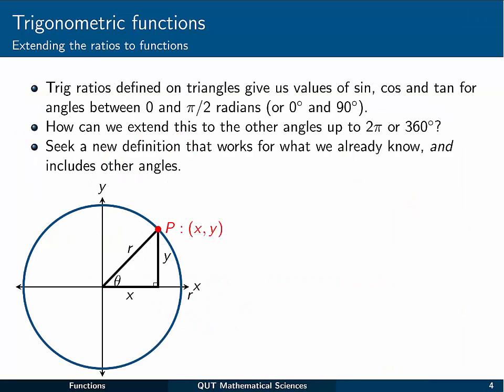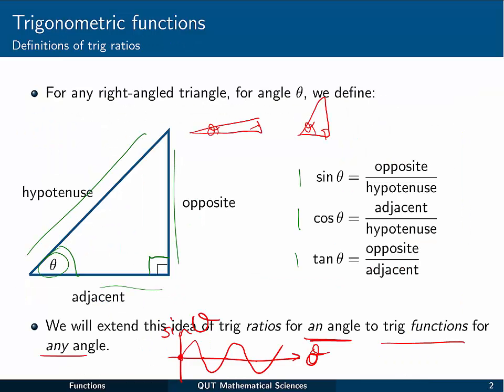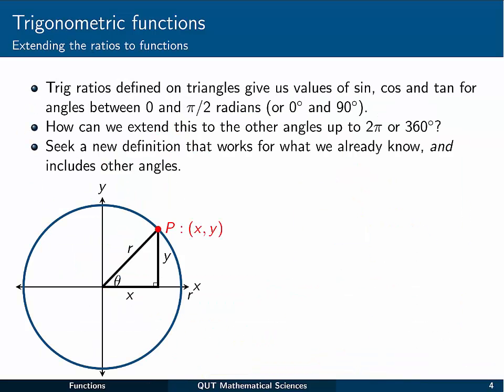So we can use these ideas of the trig ratios to give a sine, cos, and tan for any angles between 0 and pi on 2 radians, or 0 and 90 degrees, because they're defined in terms of the angles in a triangle. But how can we extend that out to angles outside of 90 degrees, such as the kind of things we want to get on our sine curve here? How can we get outside of that triangle?